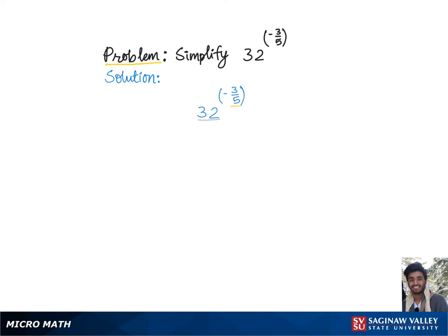So we find that number by guess and check method. We know 32 is 2 to the fifth, so our problem becomes 2 to the fifth raised to the negative 3 fifths.